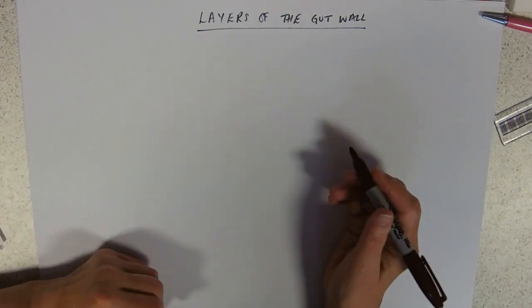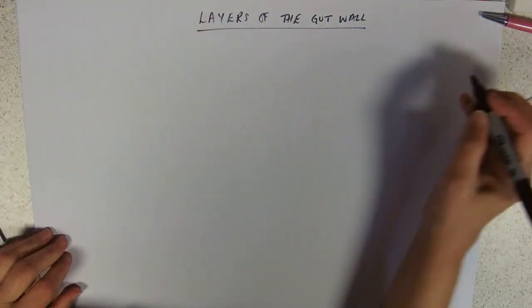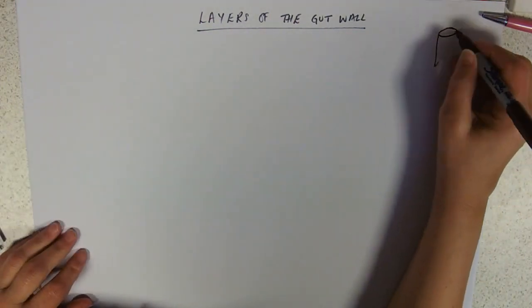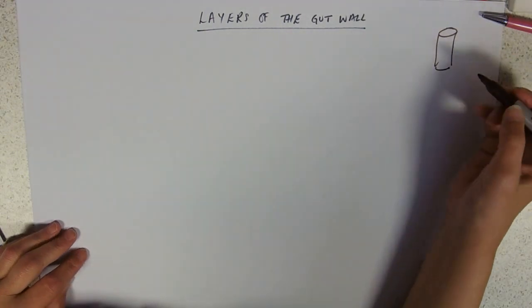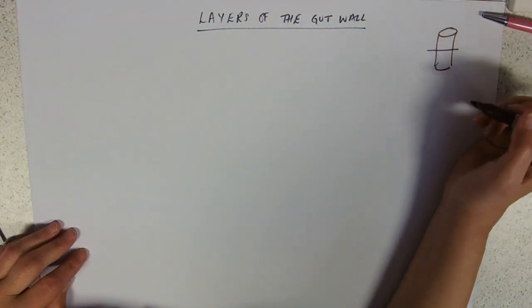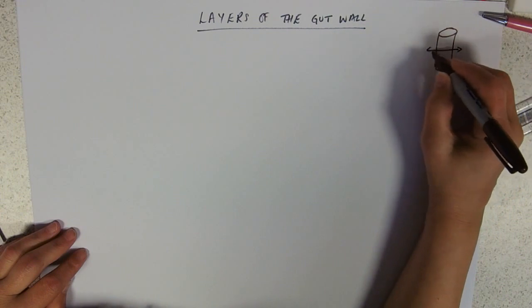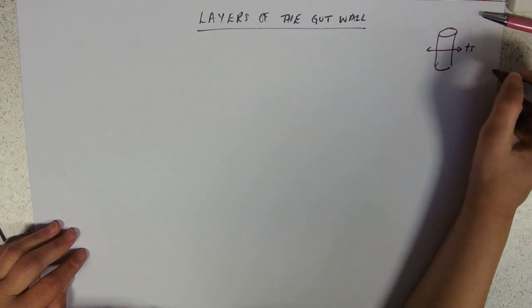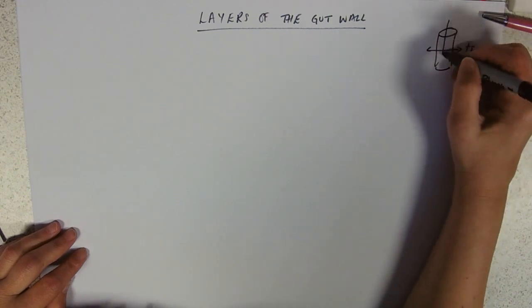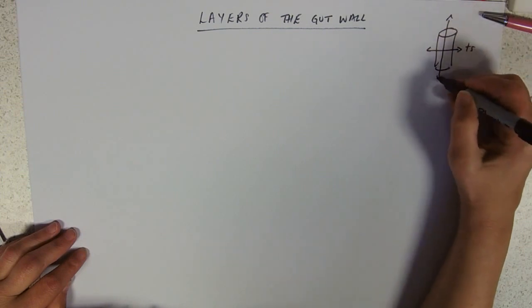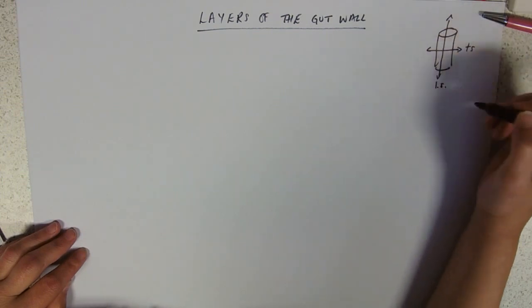Remember it's a hollow tube, so you could cut it across which would be a transverse section, but equally you could cut it up and down and that would be a longitudinal section.